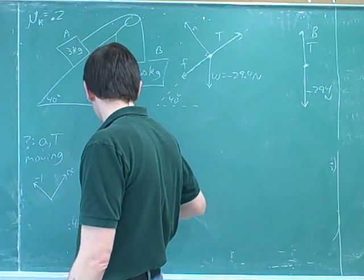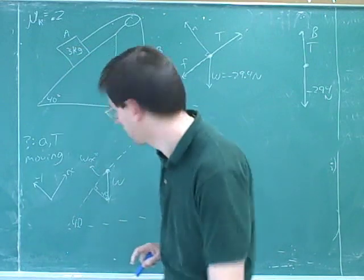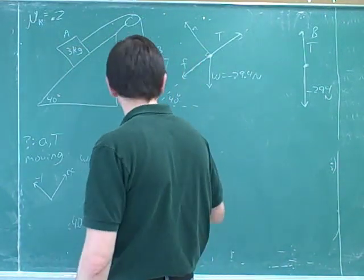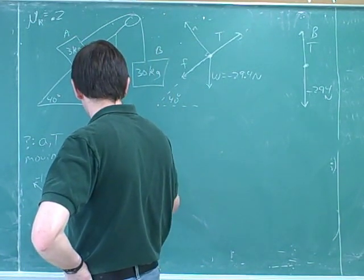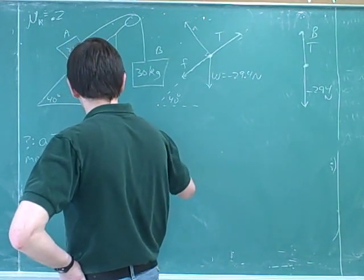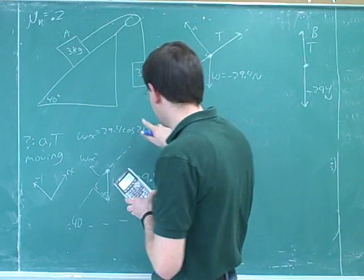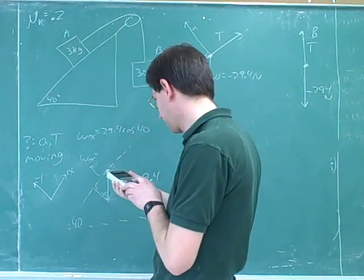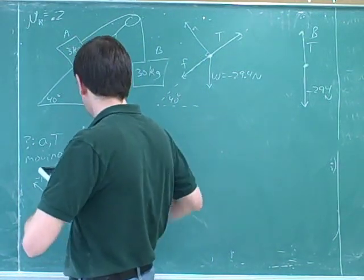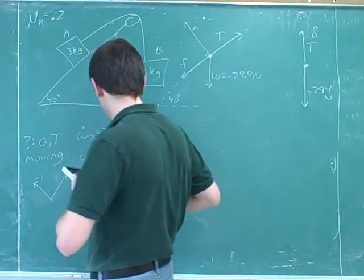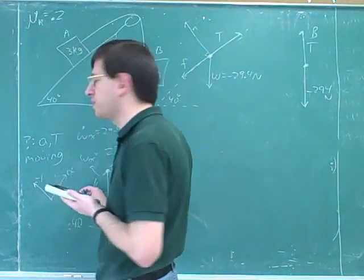Here's our weight. To calculate Wx: it's the adjacent over the hypotenuse, so we use cosine. That gives us 29.4 cosine 40°. Is that going to be positive or negative? Negative — because the x-component of the weight is trying to pull us down the plane, but our positive direction is up the plane. So let's get into the habit of putting in the signs as early as possible.